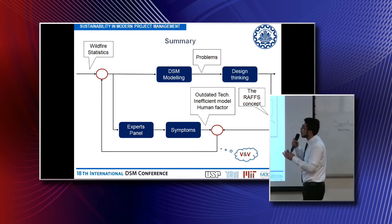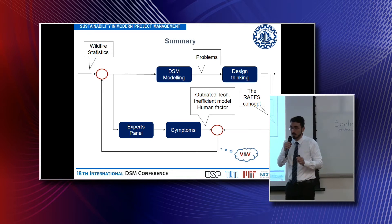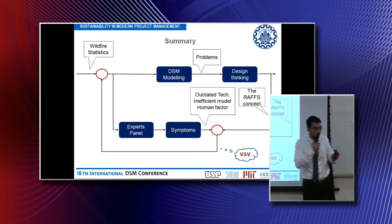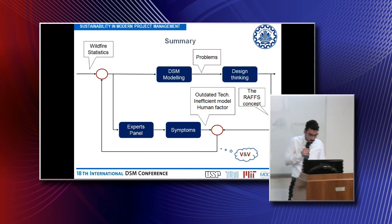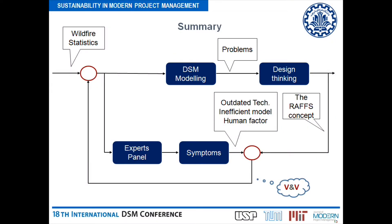As a summary: we started with some wildfire statistics — not very beautiful statistics about high fatality rates. The experts were able to classify the symptoms of the system as outdated technology, an inefficient model, and human factors.